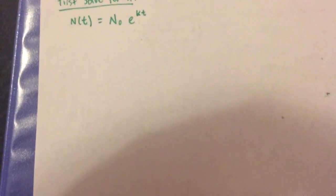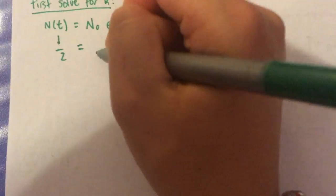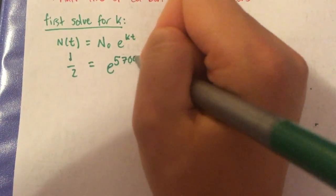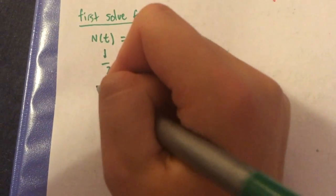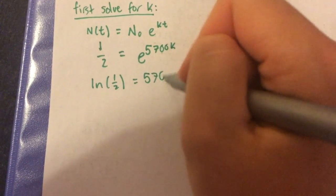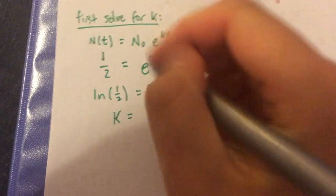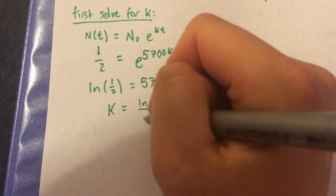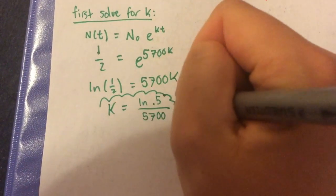Just like with Newton's Law, we're going to start by solving for k with the general form n of t equals the n of original times e to the kt. If we simplify down using what we know, we find that k equals the natural log of 1 half divided by 5,700.